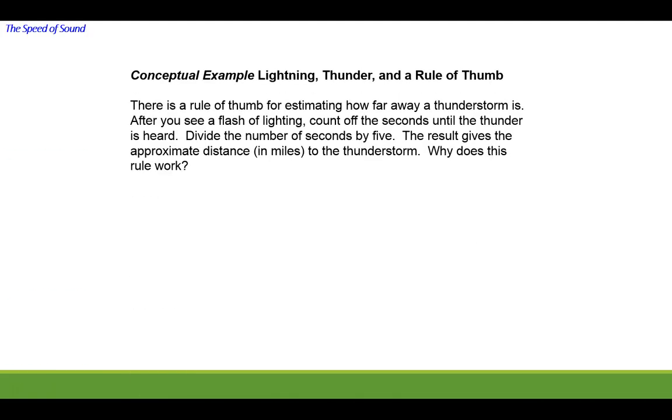Okay, there's a rule of thumb for estimating how far away a thunderstorm is. After you see a flash of lightning, count off the seconds until the thunder is heard. Divide that number by five. The result gives the approximate distance in miles to the thunderstorm. Why does this rule work?